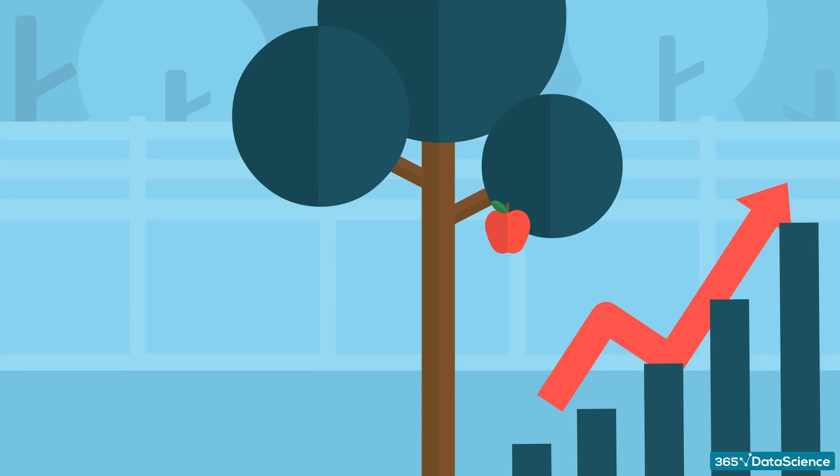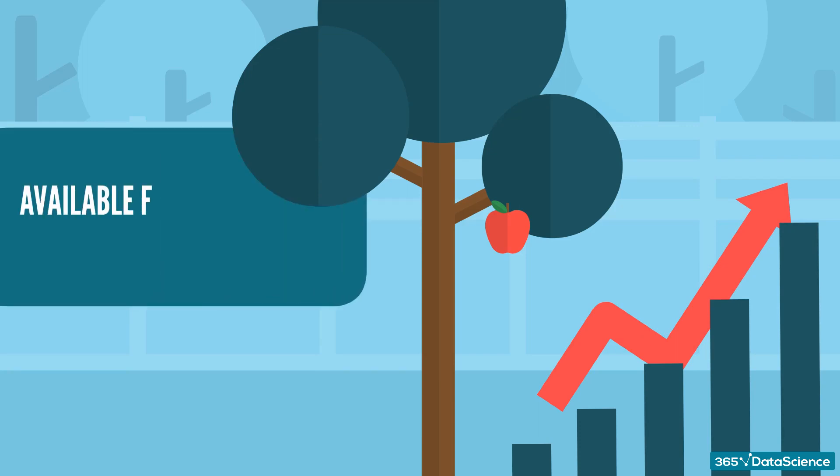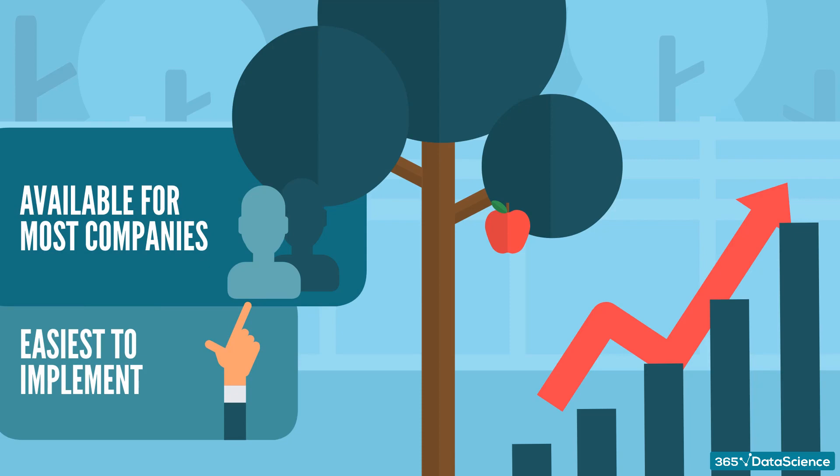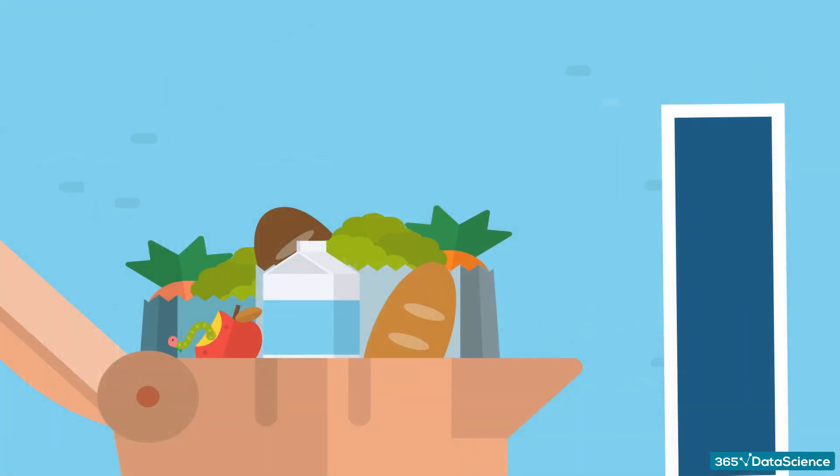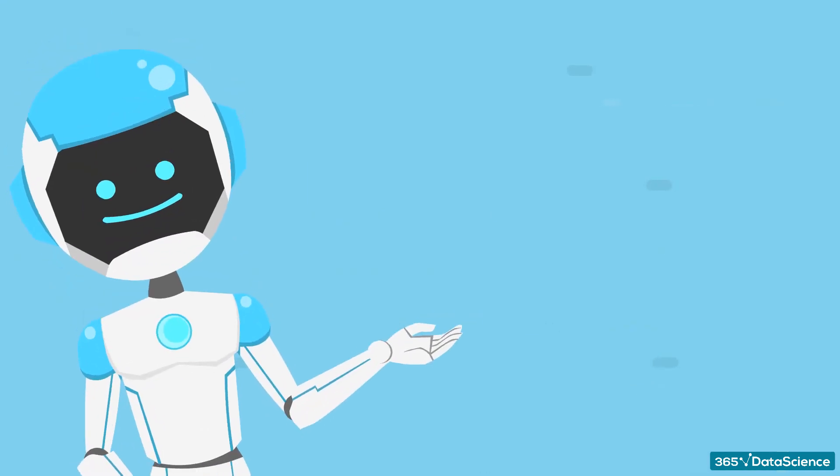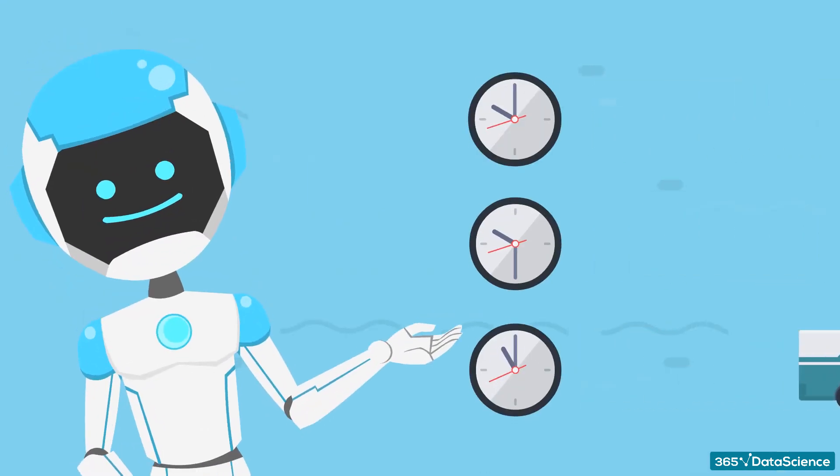What we mean by lowest-hanging fruit is an opportunity that the data science team knows is available for most companies in an industry and is easiest to implement. For example, they have seen on a few occasions that supermarket chains can greatly reduce food waste if they implement a predictive AI model, able to adjust the timing of deliveries.